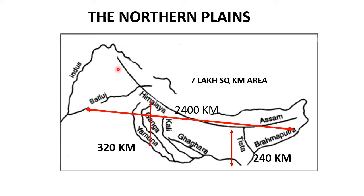To the south of the Himalayas lie the Great Indian Plains, which extend over about 7 lakh square km of total area. From west to east it extends about 2400 km, and its width varies between 240 km to 320 km.